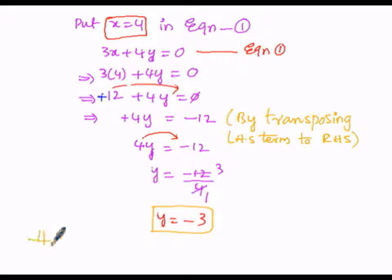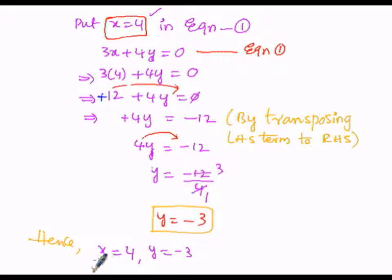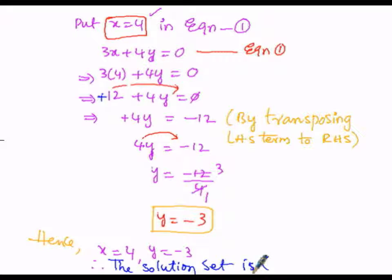Hence, x equals 4 and y equals minus 3. Therefore, the solution set of the pair of linear equations is (4, minus 3), in which x equals 4 and y equals minus 3.